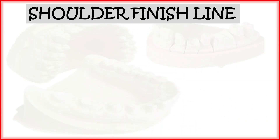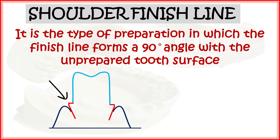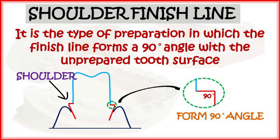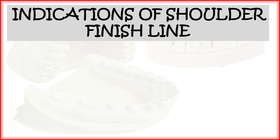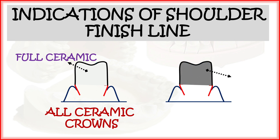The first is the shoulder finish line. It is a type of preparation in which the finish line forms a 90-degree angle with the unprepared tooth surface. As seen in the figure, the prepared and unprepared tooth surface meet at exactly 90 degrees. Shoulder finish line is indicated for full ceramic crowns and for PFM (porcelain fused to metal) crowns.